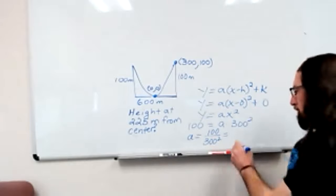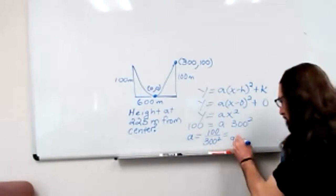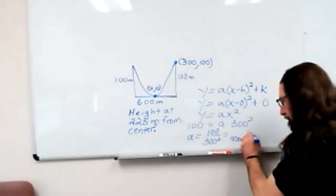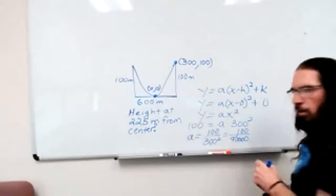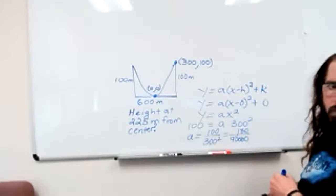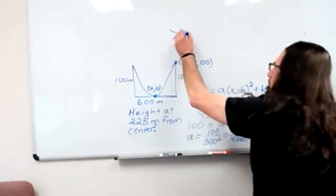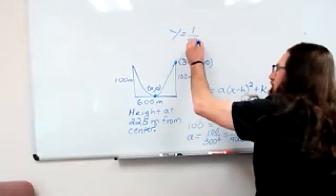Three squared is nine. You're going to have not two extra zeros, but four. And you can reduce two of the zeros from top and bottom. So a is 100 over 90000. Sorry, one over 900.